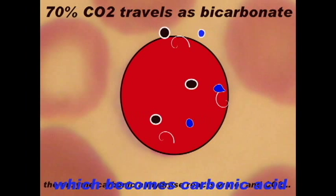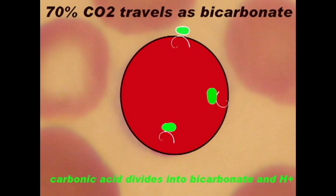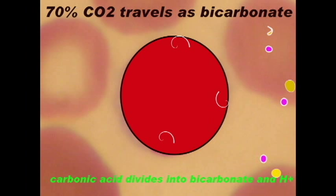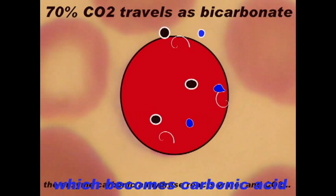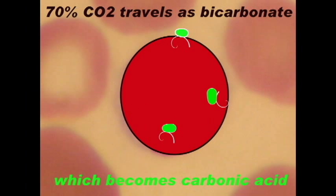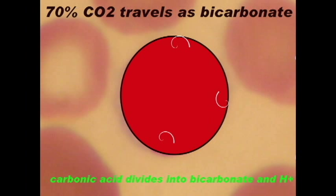70% of the carbon dioxide which travels through the blood does so in the form of bicarbonate. In the tissues, carbon dioxide enters the blood. Some of it will travel as a gas throughout the blood to the lungs. Some of it will travel bound to hemoglobin and then become a gas at the lungs.